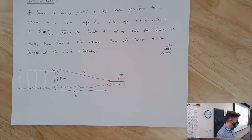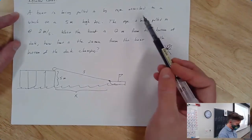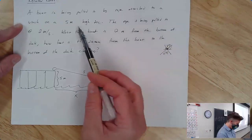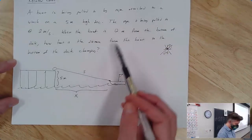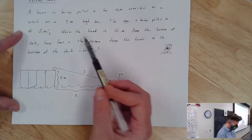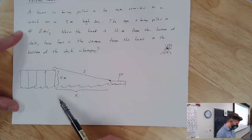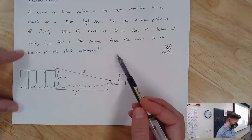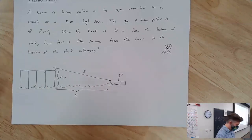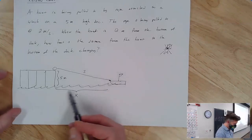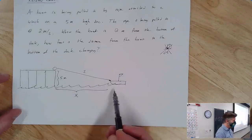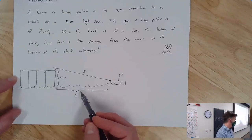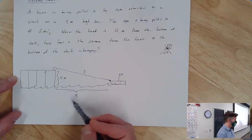Got our picture. The setup is: a boat is being pulled in by a rope attached to a winch on a 5-meter-high dock. The rope is pulled in at 2 meters per second. When the boat is 12 meters from the bottom of the dock, how fast is that distance changing? I know that eventually this distance is going to be 12 meters, but I'm not writing 12 in there because this distance is changing, so I need a variable for that.